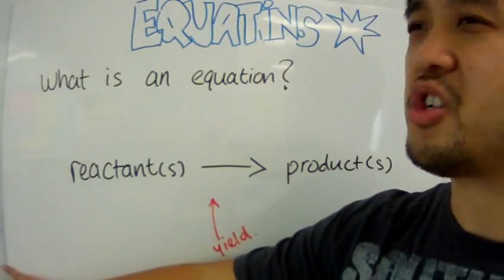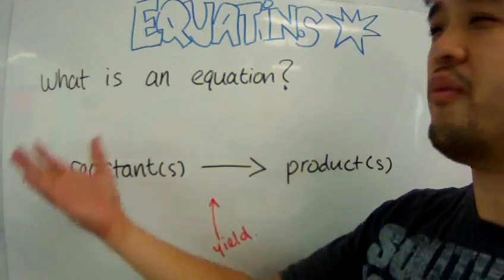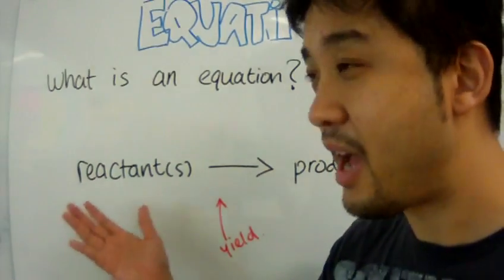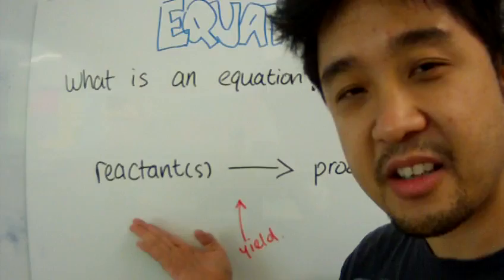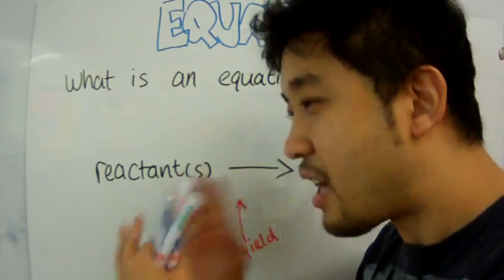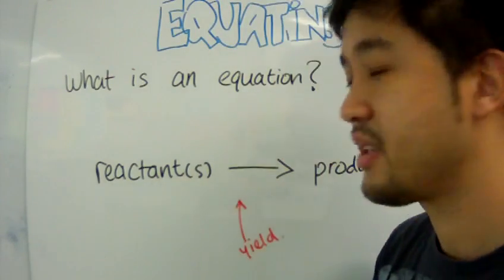And in any equation, you have an overview of the raw materials you have. And these raw materials are called reactants, things you start off with, the reactants.